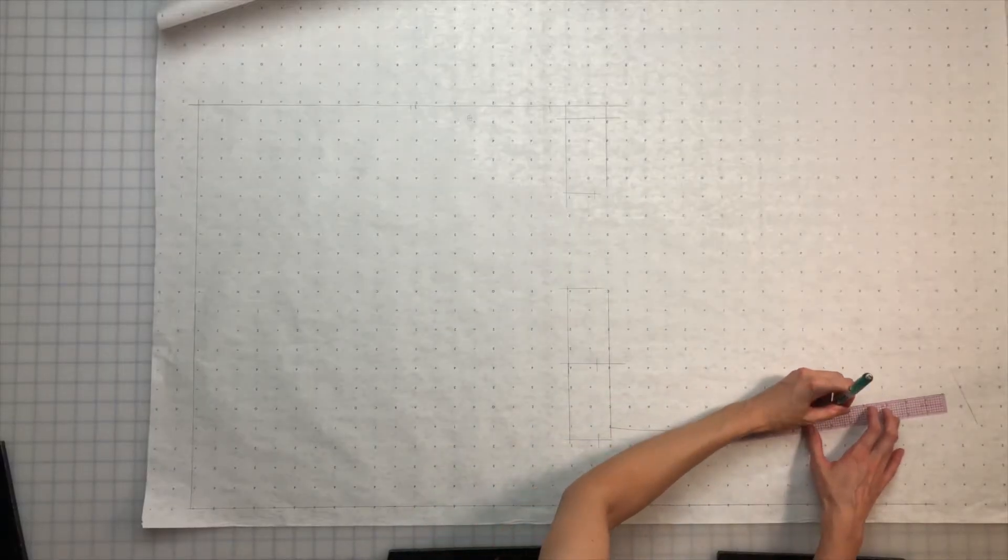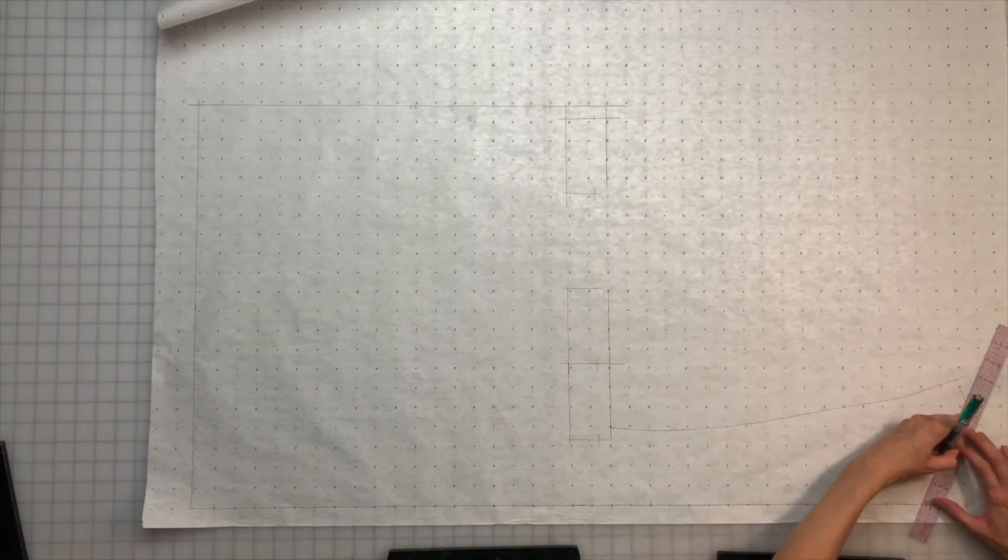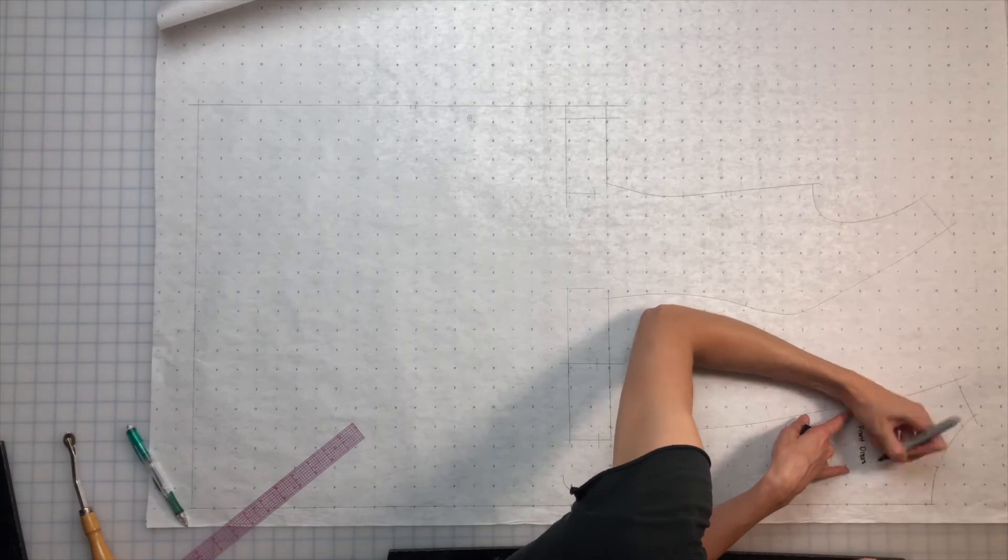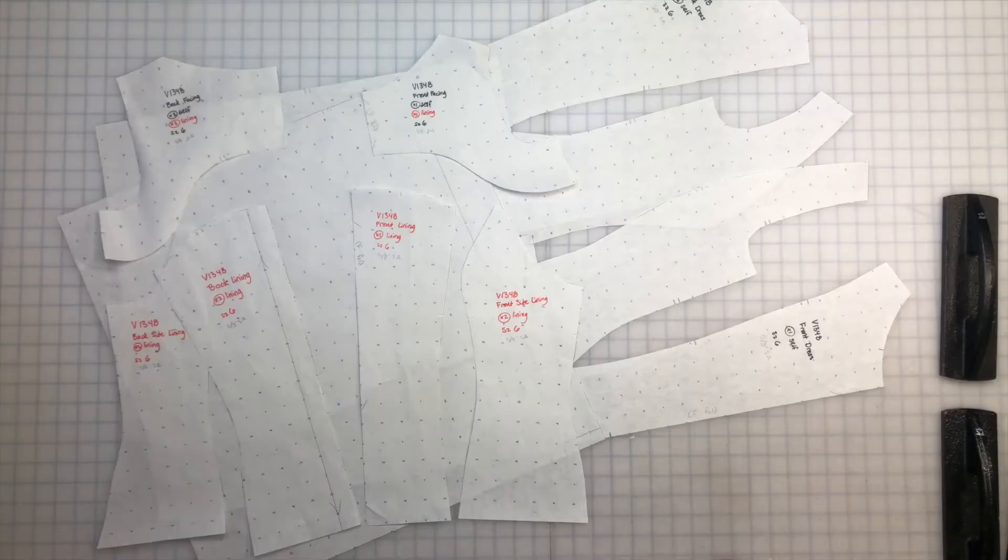I usually cut the seam allowances down to a half inch but my fabric is going to fray like crazy so I'll leave the longer seam allowance on there for now. Be sure to label the pieces as you go. I'm also marking what seam allowances are included and what size I used.